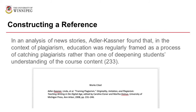Then, every citation will need a corresponding full reference at the end of your paper. This will help your reader to find the original source if they want. Both of these elements — the in-text citation and the reference — are necessary to properly cite a source. The in-text citation will quickly and unobtrusively indicate when an idea from elsewhere is being used, while the reference will guide the reader to the original source.